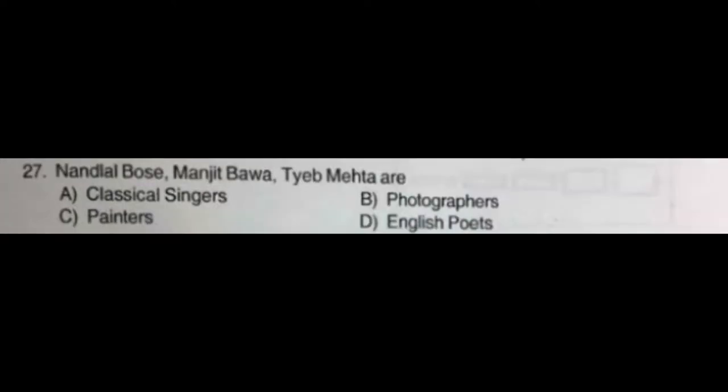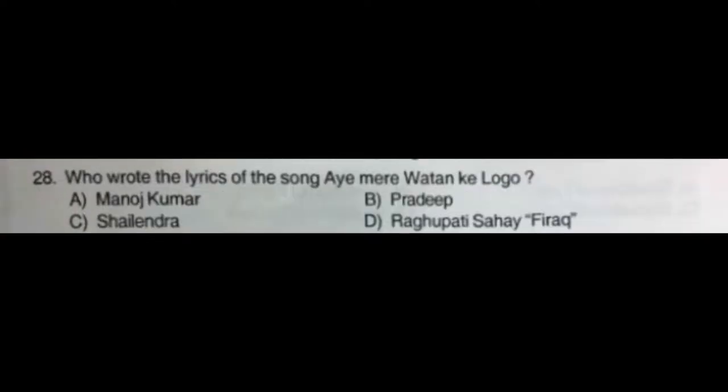Question number twenty-seven: Nandalal Bose, Manjit Bawa, and Tyeb Mehta are — option A: classical singers, option B: photographers, option C: painters, option D: English poets. The correct answer is option C: painters.